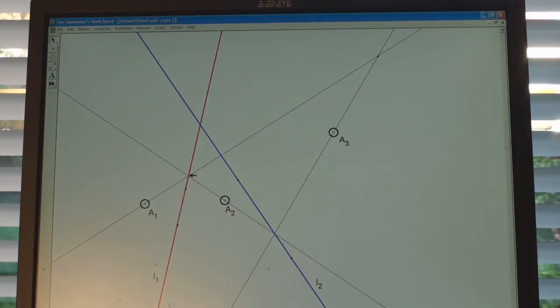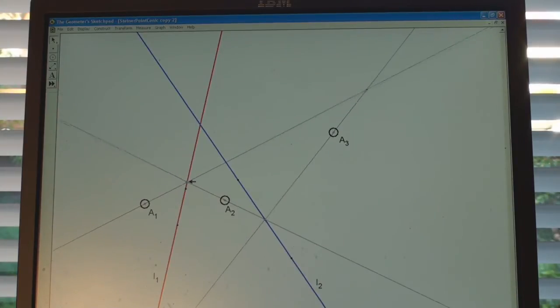So if we move this variable point, we can see that lines through A1 are connected or correspond to lines through A2.